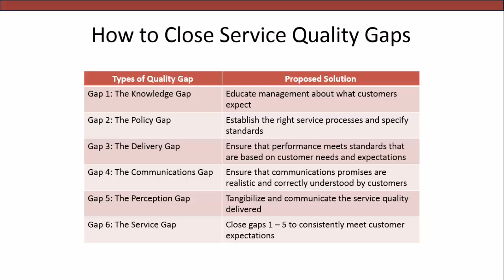Where possible, standardise repetitive work to ensure consistency and reliability. A company could also tier its customers so that different tiers are given different levels of service at different prices. Lastly, it is important to set, communicate, and reinforce measurable customer-oriented service standards for all work units. Employees have to understand and accept the goals, standards, and priorities.